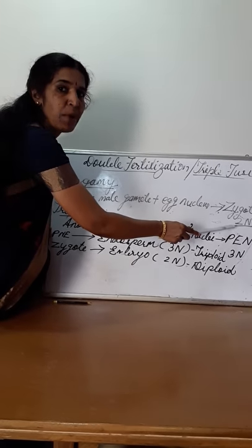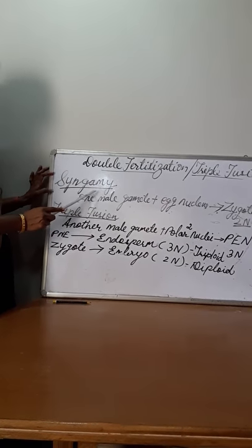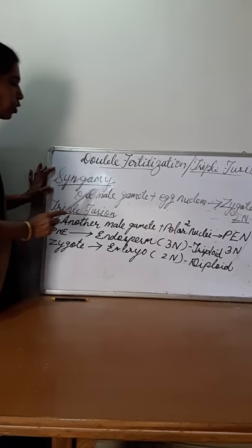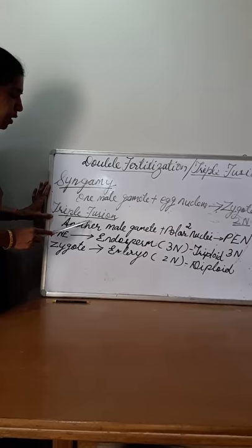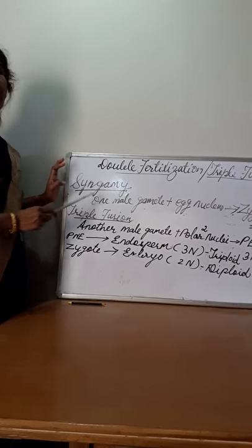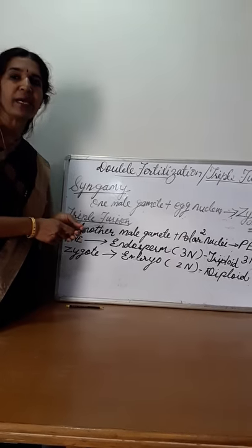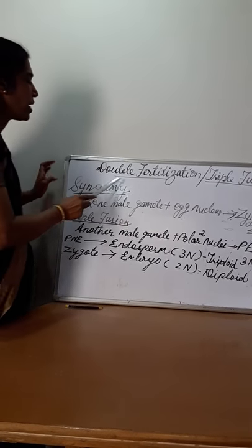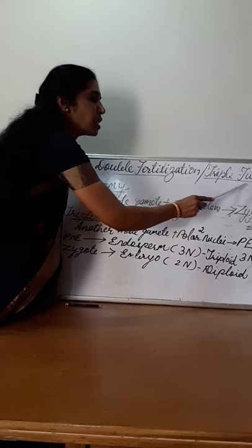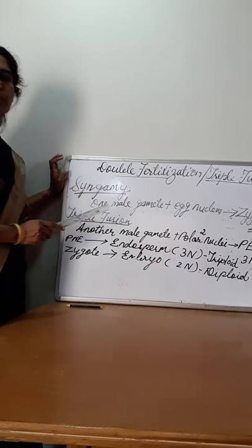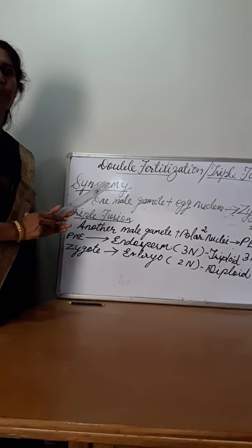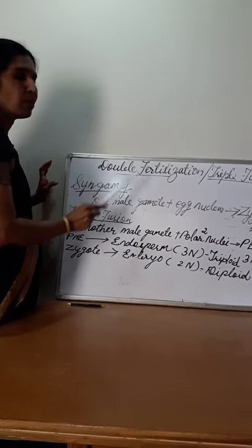Whereas the zygote is diploid in nature. Syngamy — fusion of male and female gamete — produces the zygote. Triple fusion takes place simultaneously in the embryo sac. So that is why this process is known as double fertilization, because two fertilizations take place simultaneously in the ovule or embryo sac.